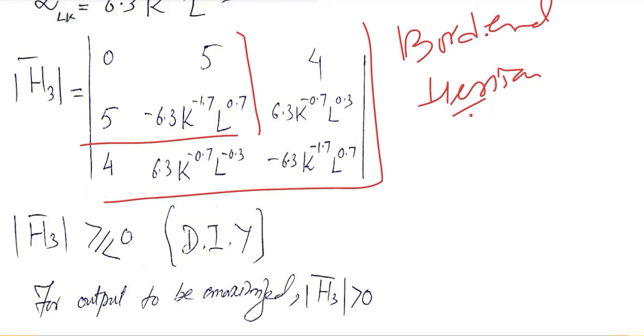Let me give you the hint for that. If we solve the first, the second principal minor, that is H2, the answer would be 5 into 5, that would be minus 25. So this is negative.